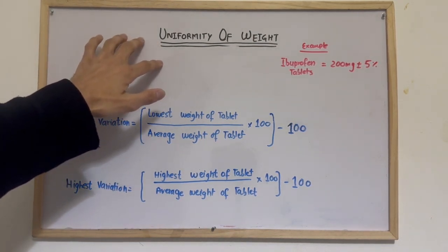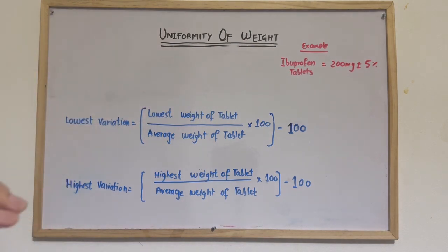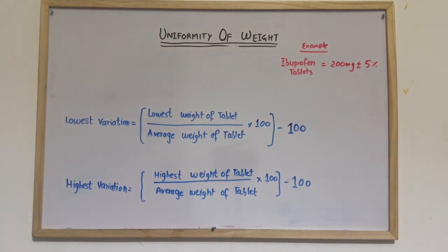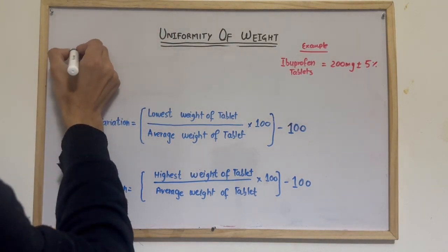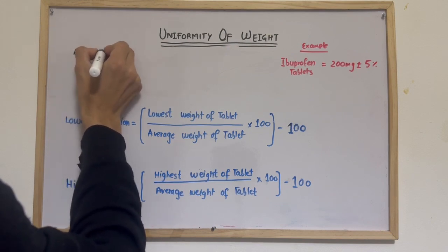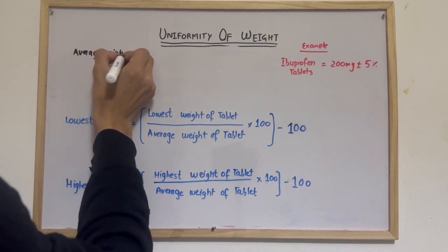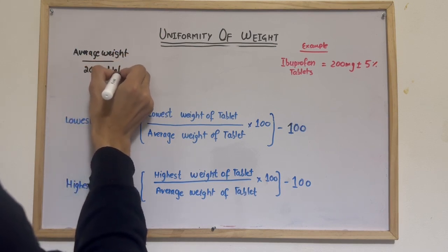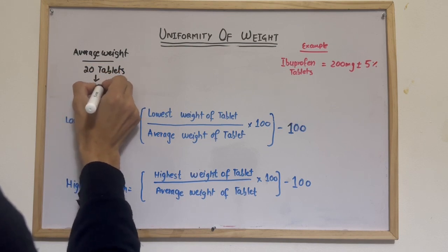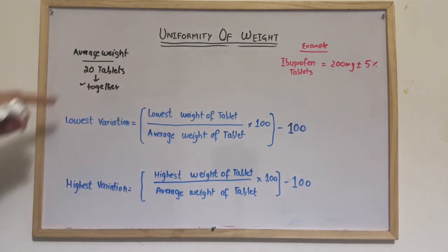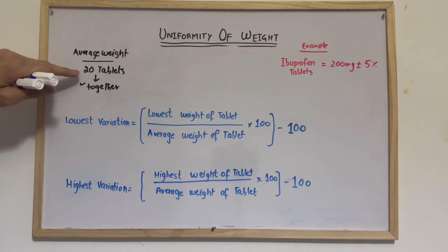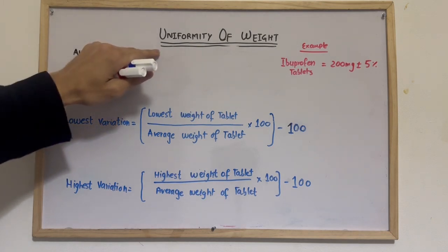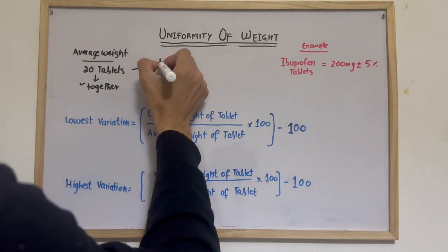Uniformity of weight is calculated for individual tablets. Most of the time you may confuse uniformity of weight with average weight, so let me explain how they differ. For average weight, 20 tablets are taken together and divided by 20 to get the average weight. For uniformity of weight, you need to weigh individual tablets.